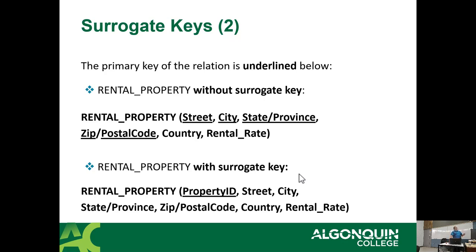Here's an entity called rental property. The first one has no surrogate key — the only way to identify a rental property would be by street, city, state, and postal code. The combination of all those columns would uniquely identify a property for rent. If it's an apartment building, you'd need a unit number too. If we wanted to make it easier to manage, we'd add a surrogate key such as property ID — then every time we look up a property, we just use the property ID. Like MLS listing numbers on houses for sale.